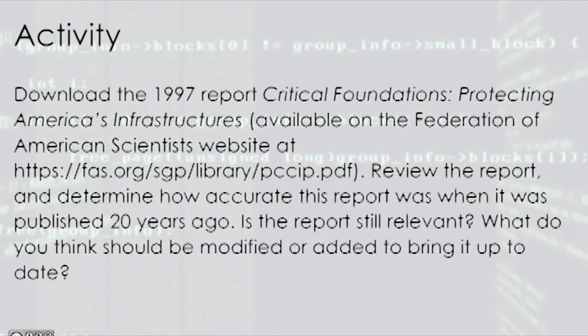The activity for this module asks that you download the 1997 report 'Critical Foundations: Protecting America's Infrastructure,' available on the Federation of American Scientists website. Review the report and determine how accurate it was when published 20 years ago, whether it is still relevant, and what you think should be modified or added to bring it up to date.